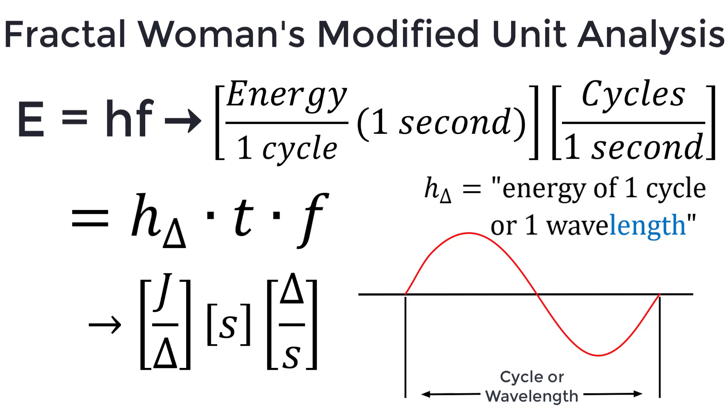If we decouple the unit of time from Planck's constant, the energy equation becomes modified Planck's constant multiplied by time and frequency. This new Planck's constant has units of joules per cycle and is equivalent to the energy of one cycle or wavelength.